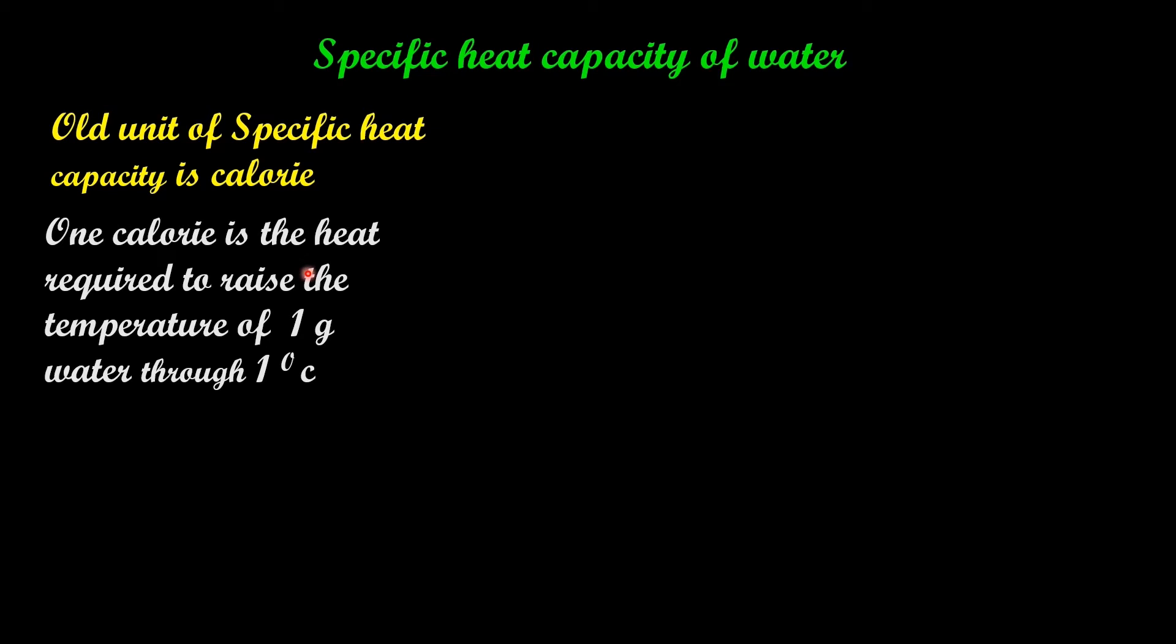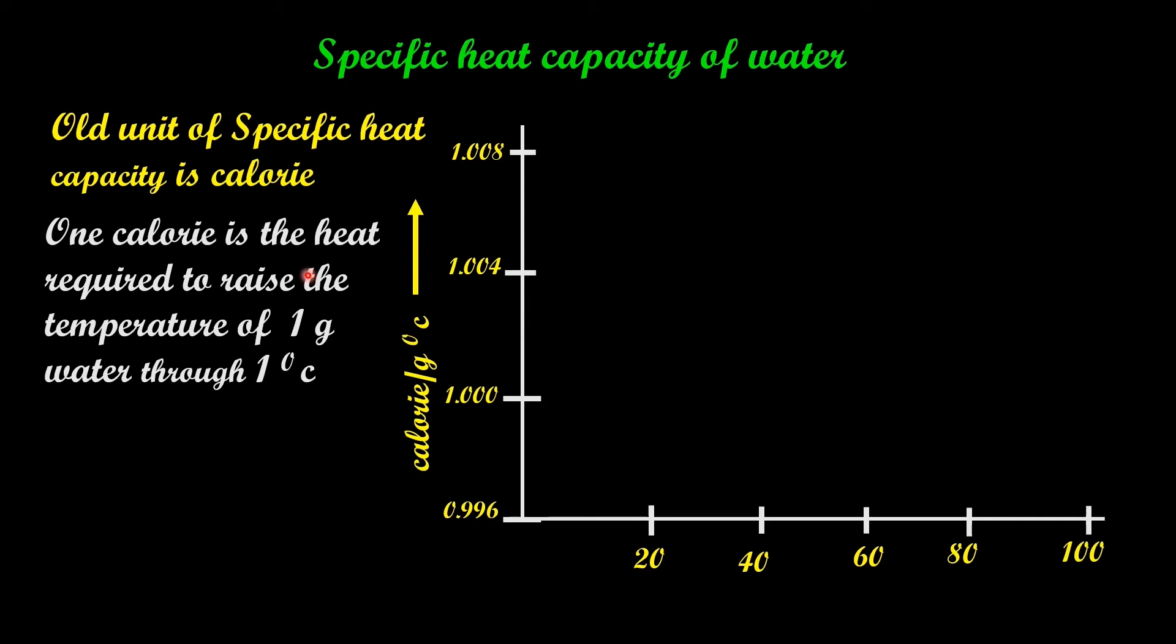We will plot a graph. This is the Y axis and X axis. Specific heat capacity is represented along the Y axis and it is in calorie per gram degree Celsius.